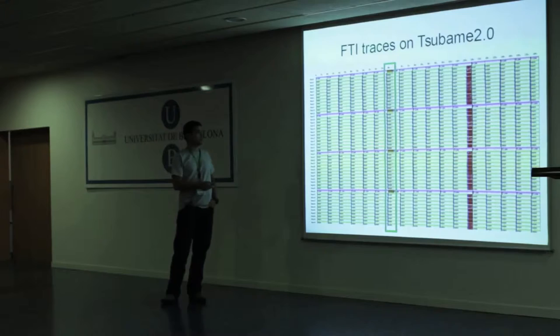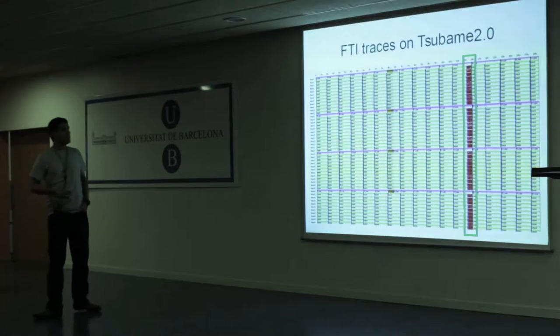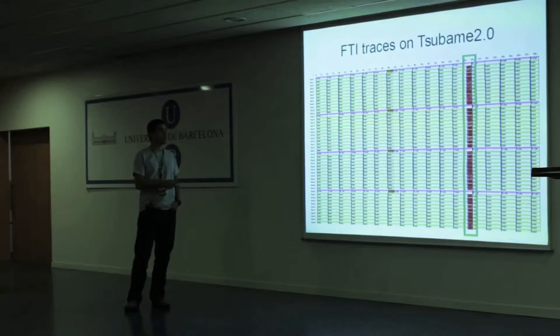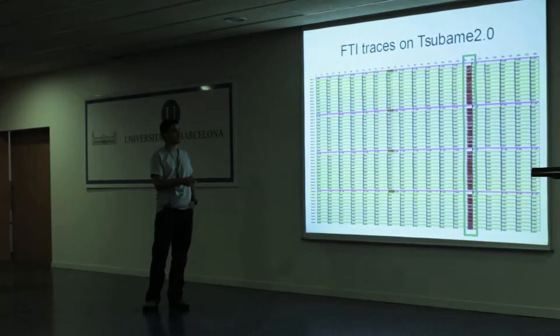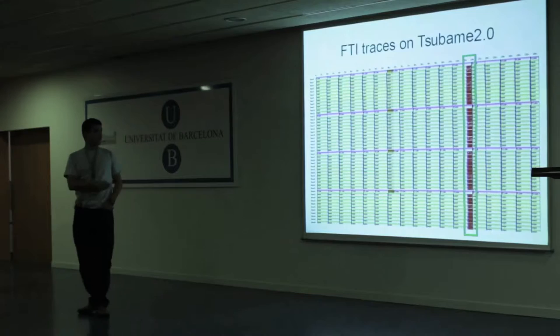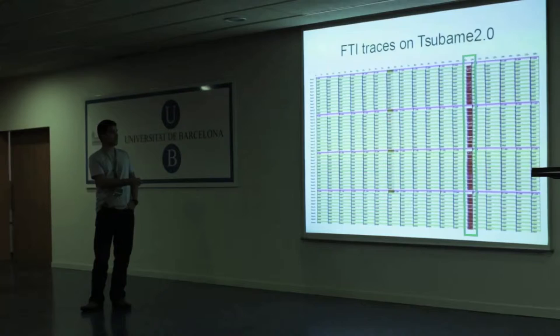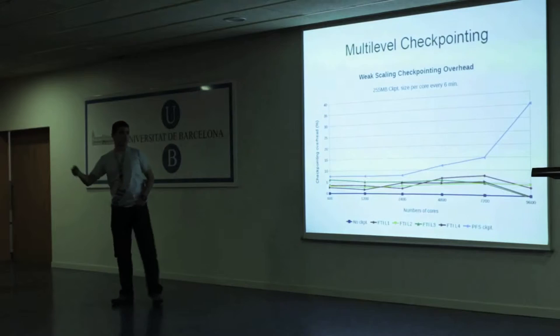Finally, level four checkpoints to the parallel file system, which is supposed to be reliable storage. In this run we also enabled an option to compress the dataset before writing to the parallel file system — that's the red line showing compression — and the transfer is done asynchronously. In this small example the transfer is actually faster than compression, so compression wasn't very useful here, but it demonstrates one of FTI's options. The encoding for level three is also done asynchronously while the application keeps running.